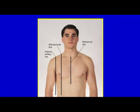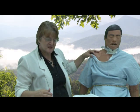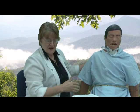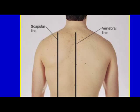Reference lines include the mid-sternal line down the center of the chest, the mid-clavicular line through the center of the clavicle going downward, and the anterior axillary line at the axilla beneath the arm. Posteriorly, there is the vertebral line up and down the back and the scapular line through the mid-scapula.